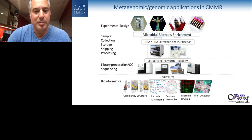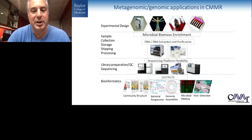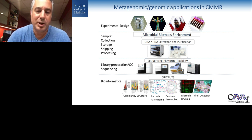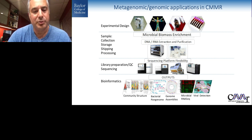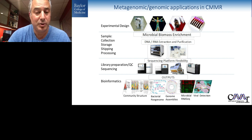Our omics-based applications start with a metagenomic or genomic process. We collect and design experiments for any type of environment or human condition, collect applicable samples, extract DNA and RNA, and sequence using a variety of sequencing platforms. We work with the Human Genome Sequencing Center at Baylor College of Medicine, one of three large-scale NHGRI-funded sequencing centers in the United States, which offers a large variety of sequencing opportunities and platforms.